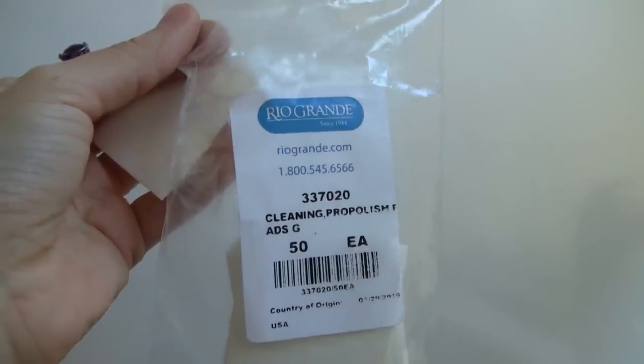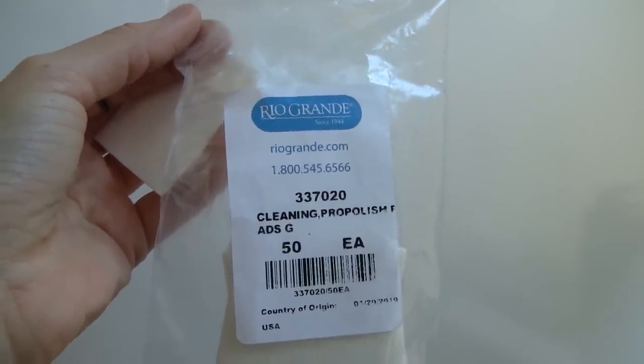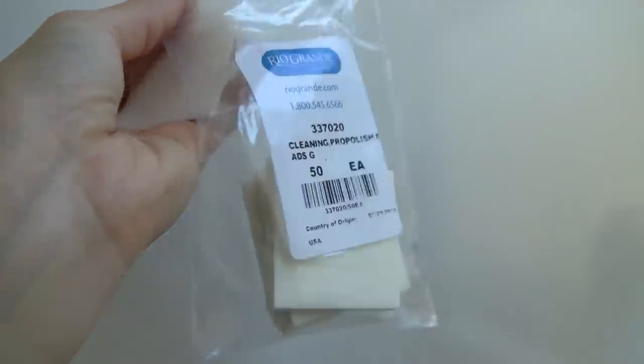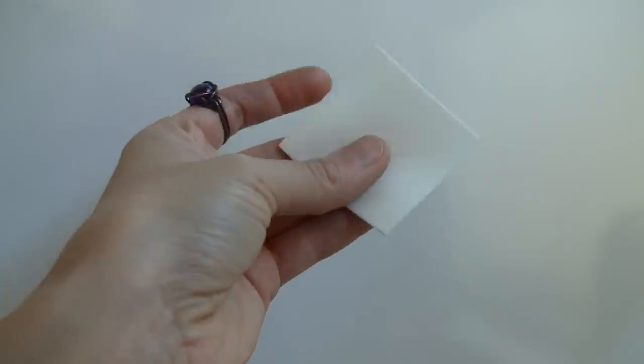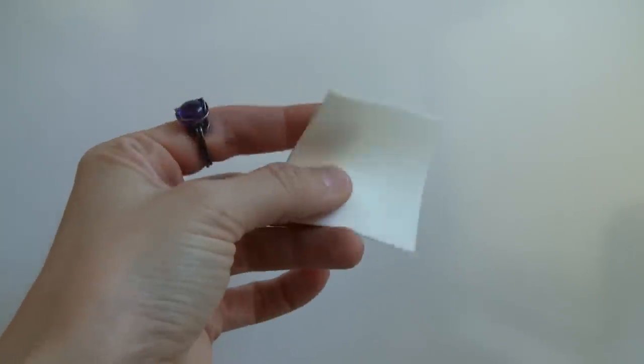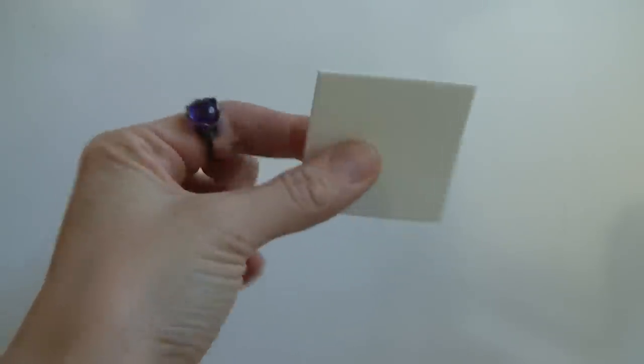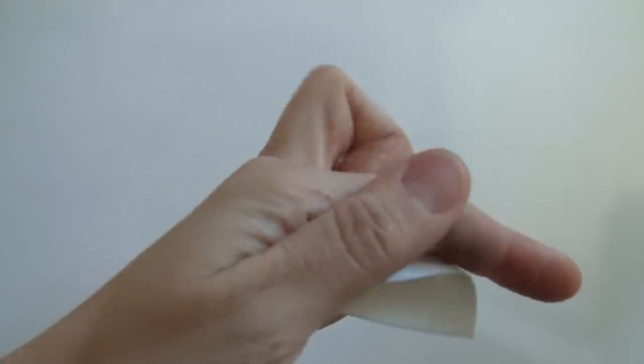So the Pro Polishing Pads I use look like this. I buy them from Rio Grande. I'm sure there's other places you can buy them. It comes in a bag of 50 of them. It looks like a little white, flexible, foamy kind of paper. So what I do, I should have set up my camera on a tripod because I'm holding it with my hand.